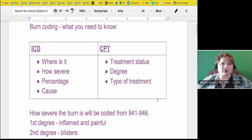What you need to know about burn coding? For ICD, the questions you need to know to get the proper code are where is the burn, how severe is the burn, the percentage of body area, and the cause of the burn. Those are the things you need to know for ICD.